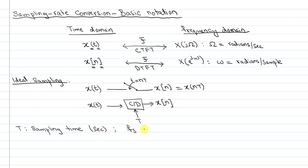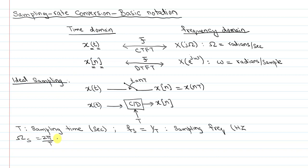We'll have Fs, which is the inverse of the sampling time, as the sampling frequency in hertz. And then we'll have omega s, which is 2 pi over T, as the sampling frequency in radians per second.